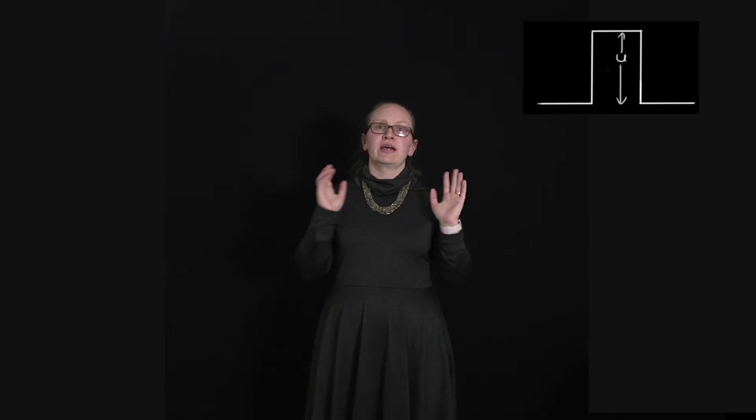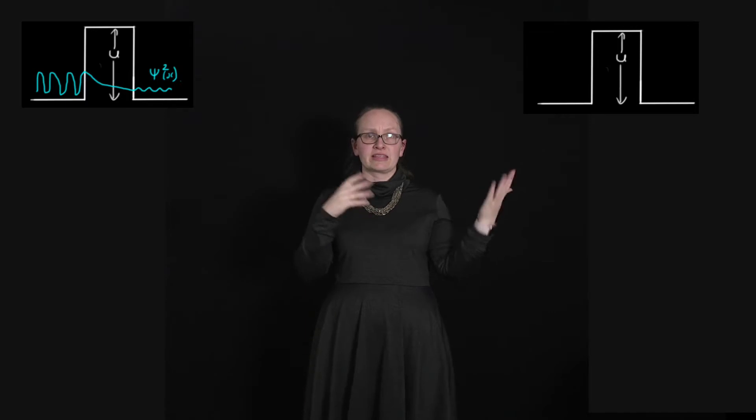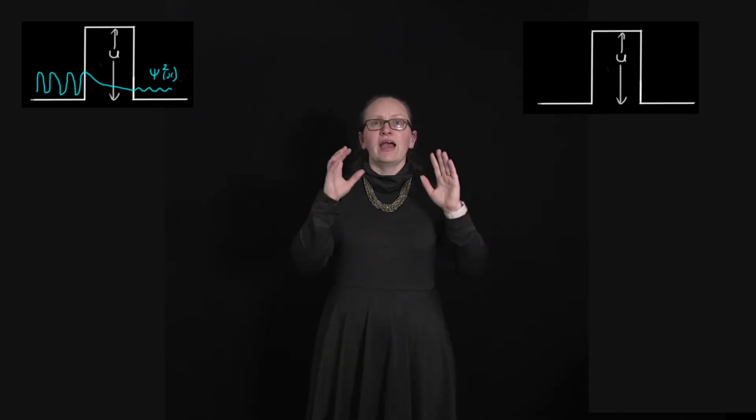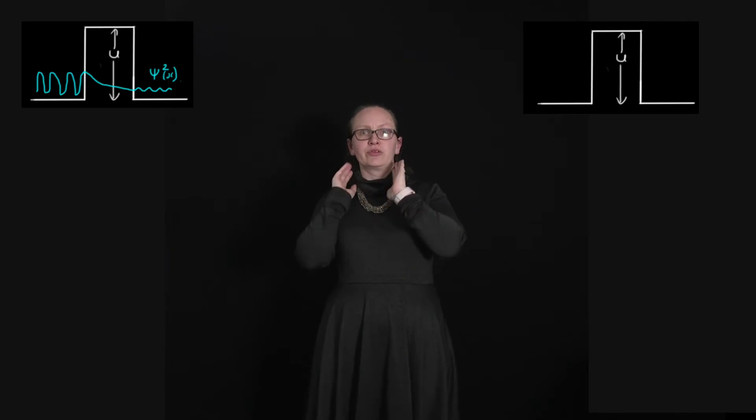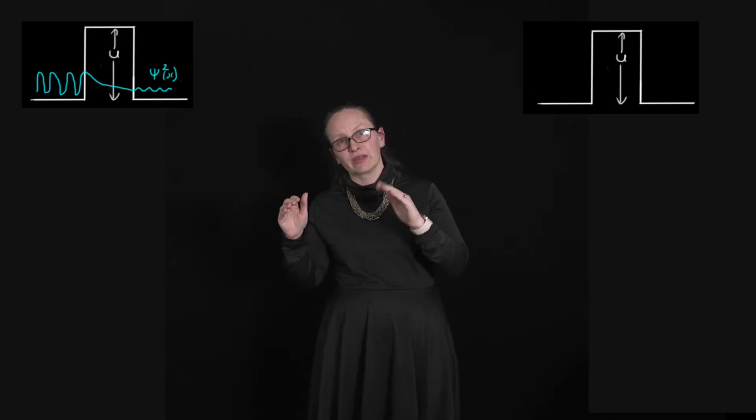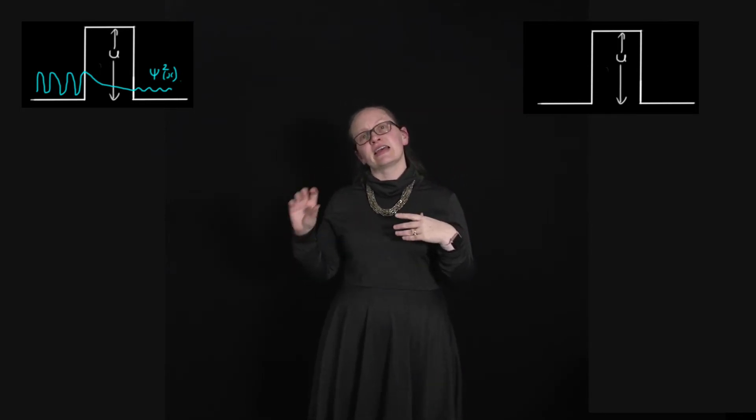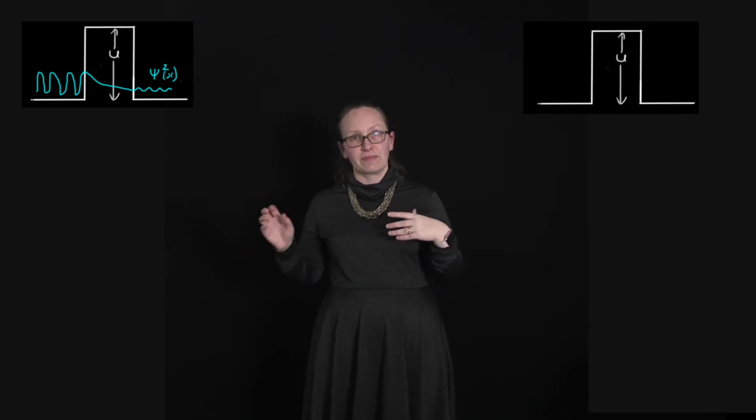Now if we put an electron on one side of it we've got some wave function on that side to describe the electron and then when it comes to the barrier itself the probability of finding the electron inside there actually drops off exponentially. So it's dropping off really quickly but is still there and so there is a small probability of finding the electron on the other side of the barrier.